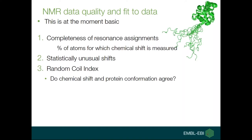For NMR structures, the report also has some indication of quality metrics, though at the moment it's relatively basic. The report gives the completeness of resonance assignment — the percentage of atoms for which chemical shifts are measured — and lists statistically unusual chemical shifts. Unusual doesn't mean wrong; it's just worth looking at.